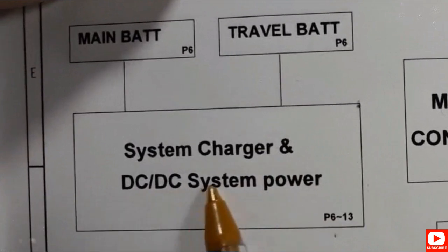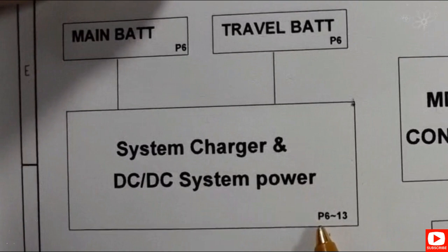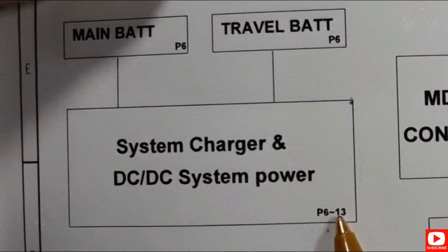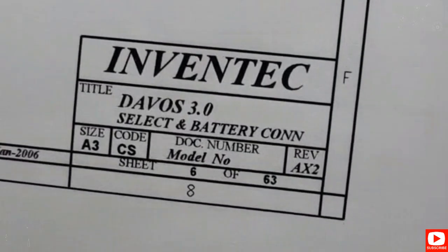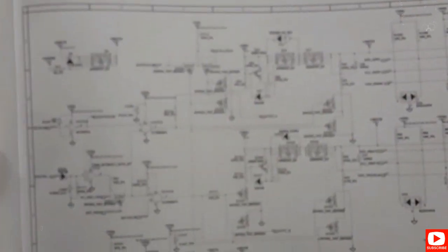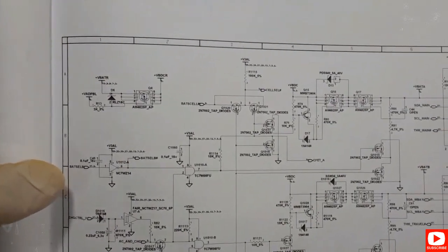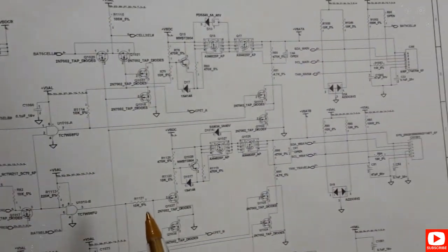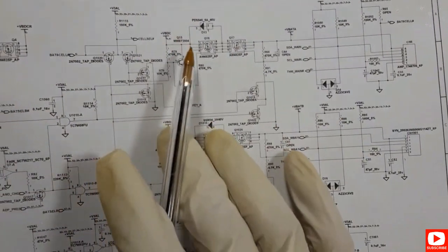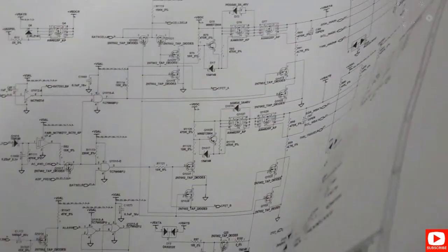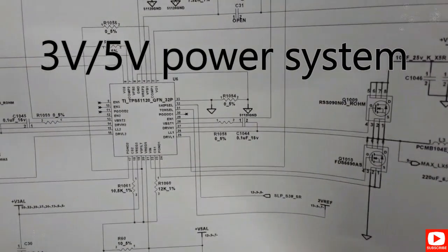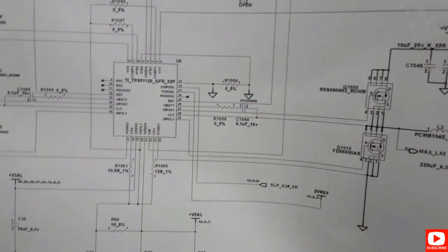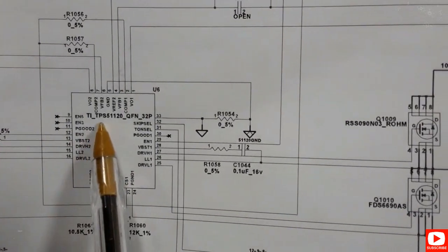From page 6 to page 13, we'll find everything about DC-to-DC system power — 3V, 5V system power, CPU system power, RAM system power, VCCP system power, etc. Page 6 shows the power conversion circuit responsible for power. Page 7 has the 3V and 5V power management IC, reference TPE 51120. This IC is responsible for generating 3V and 5V.